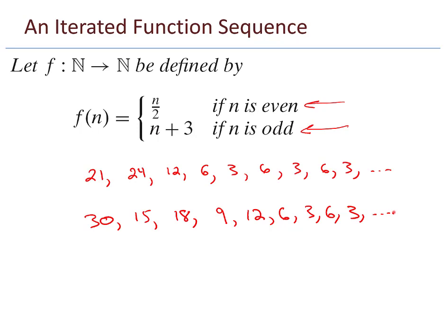Here's something else. How about 34? 34 is even, so the next number after that is 17, which is odd. So after that I get 20 and then 10 and then 5 and then 8, 4, 2, 1. Now what happens? 1 is odd, so I add 3 to get 4. And now look at this, this 4, 2, 1, 4, 2, 1 loop. So it looks like we have two different loops. We have a 6, 3 loop and a 4, 2, 1 loop. Are there other loops? Are there any fixed points? These might be some questions that we ask when we're working with an iterated function sequence.